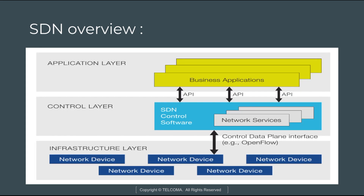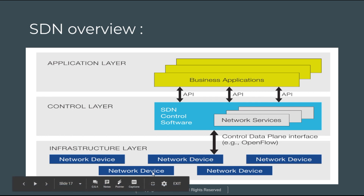Let's see these applications and planes. In the application layer, we can have business applications. In the control layer, there is SDN controller software providing various network services via APIs. In the infrastructure layer, network devices are present and they can communicate with the control layer with the help of interfaces, for example, OpenFlow.